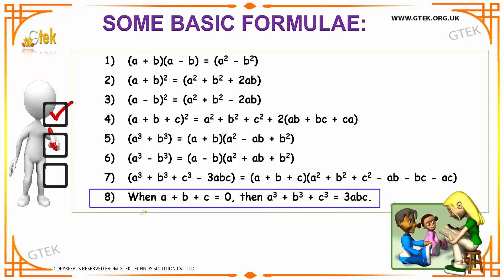Our eighth formula says that when a + b + c = 0, then a³ + b³ + c³ is nothing but 3abc. If you see, your eighth formula is obtained by substituting a + b + c = 0 in the right hand side of your seventh formula. Anything multiplied by 0 is 0, hence a³ + b³ + c³ = 3abc.